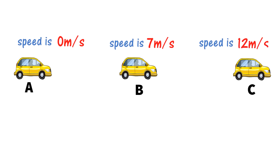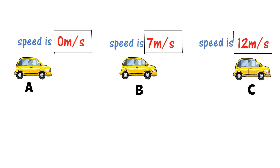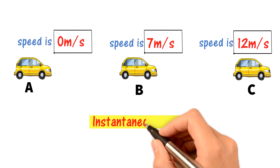Now what is 0 meter per second, 7 meter per second, and 12 meter per second? These values — 0 meter per second, 7 meter per second, and 12 meter per second — are the instantaneous speed of the car.